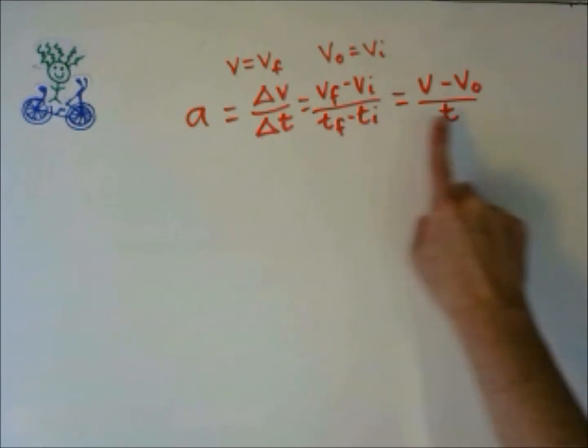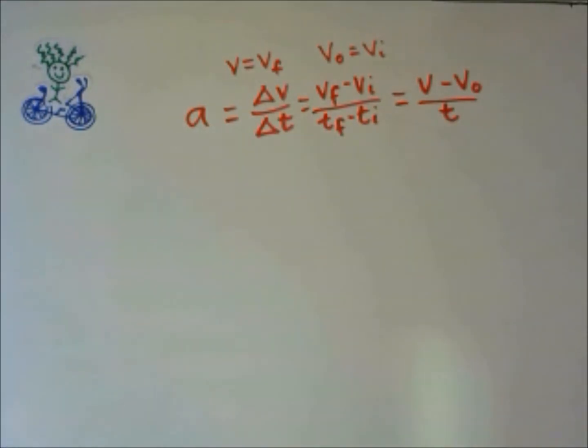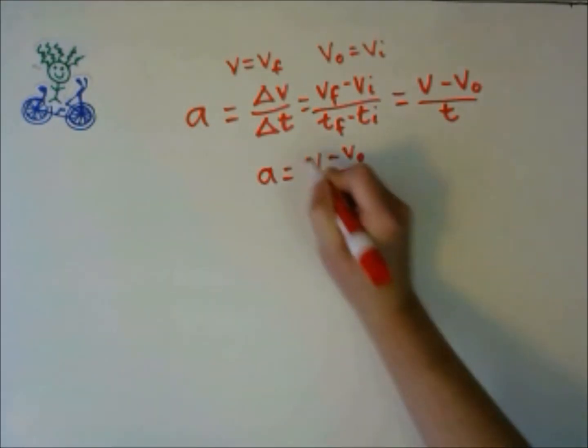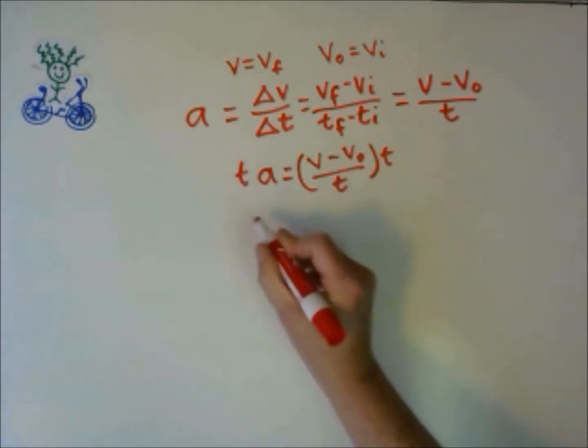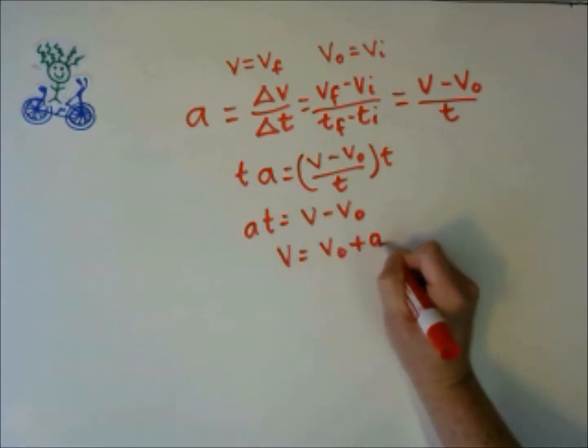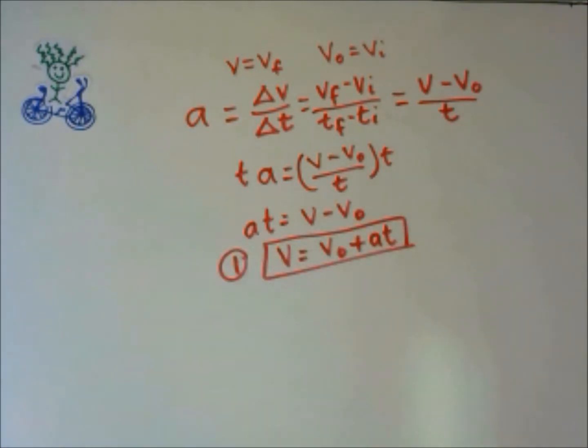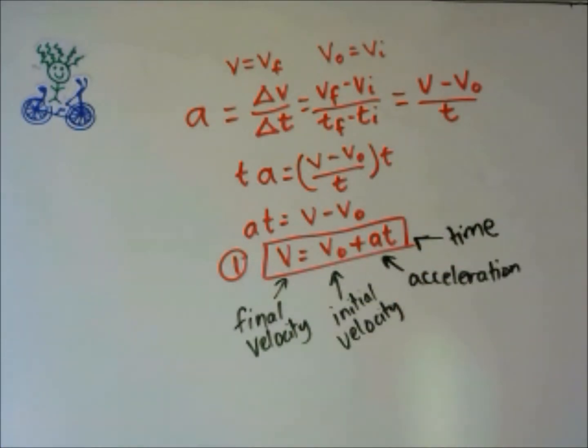So if we take this equation, we can rearrange it. We multiply both sides by T, and then we get V by itself. This is our first kinematics equation. Our first kinematics equation says our final velocity equals our initial velocity plus our acceleration times time.